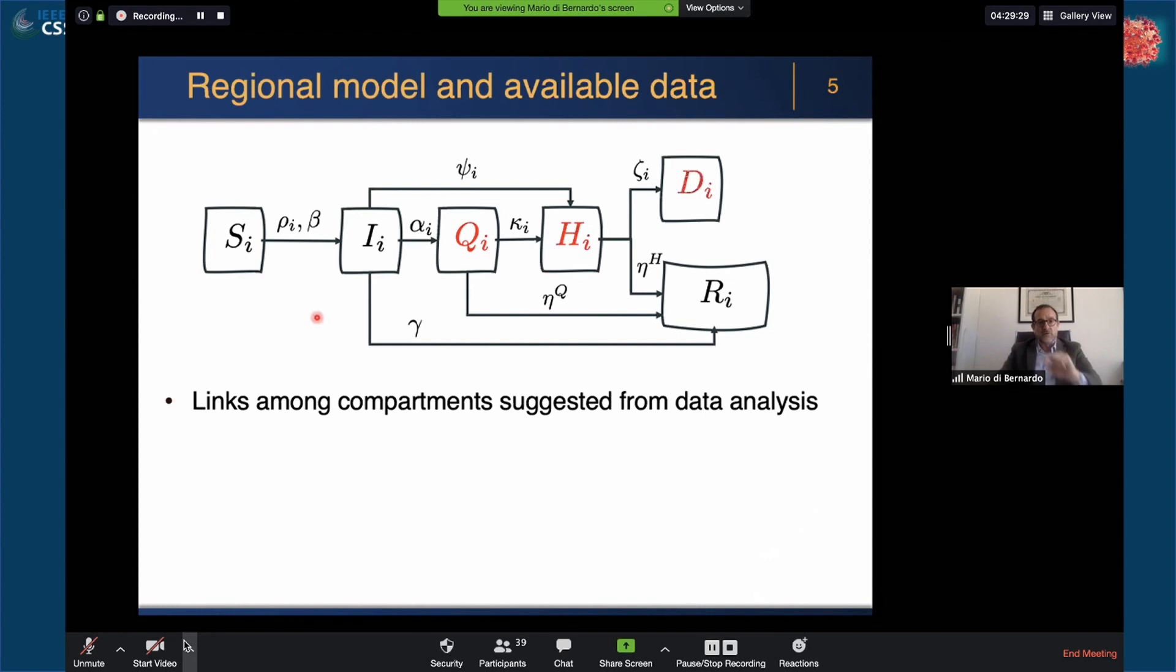Some assumptions that we made: First, let's look at the data that we have available, plotted here in red. We have from the Protezione Civile almost on a daily basis the number of quarantined, hospitalized, the deceased and the recovered. Since we have this link from the infected to the recovered, we're only assuming we know the number of recovered that were previously in hospital or previously quarantined.